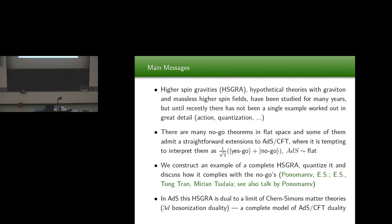The main message is that even though higher spin gravity is a hypothetical theory with a graviton and massless higher spin fields — studied for many years — until recently there hasn't been a single example worked out in detail, with action quantization where you can prove things. There are also many no-go theorems in flat space against higher spins, and recently it was shown that many of them extend to ADS and ADS-CFT. Our result is that we managed to construct an example of higher spin gravity, quantize it, and I will discuss how it complies with all these no-go theorems.